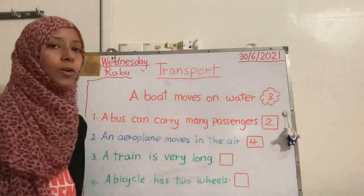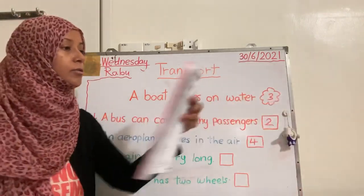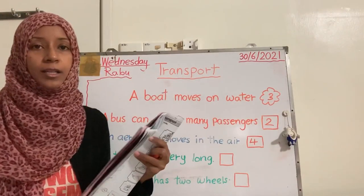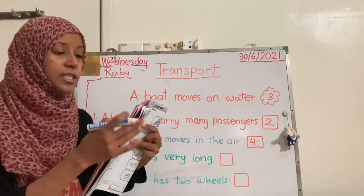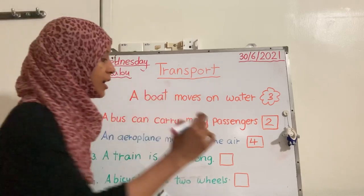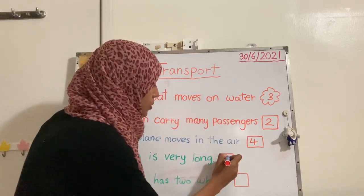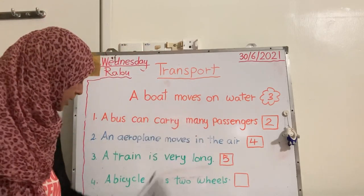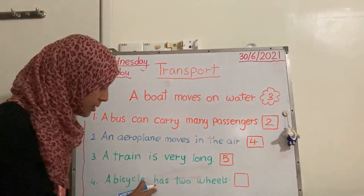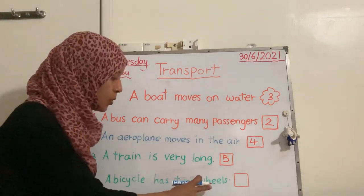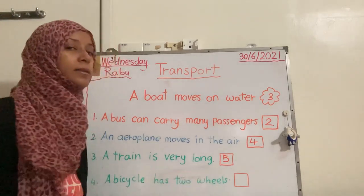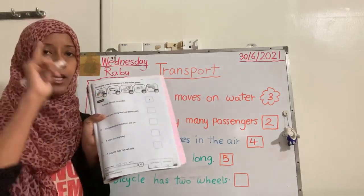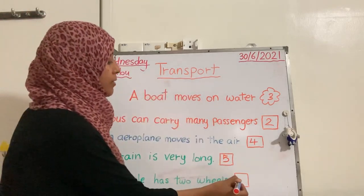Let's go to number four: a train is very long. Where is the train picture? It's number five — very good! Last one: a bicycle has two wheels. Where is the bicycle picture? We have only one left, so that's number one.